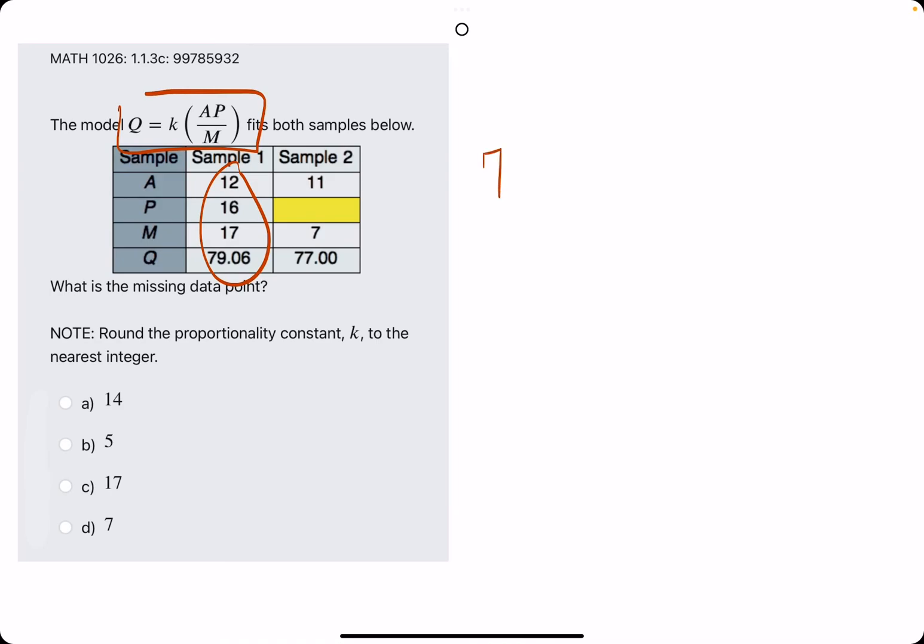So the Q value on the left side of the equation is 79.06. We know that A is 12, we know that P is 16, and we know that M is 17.